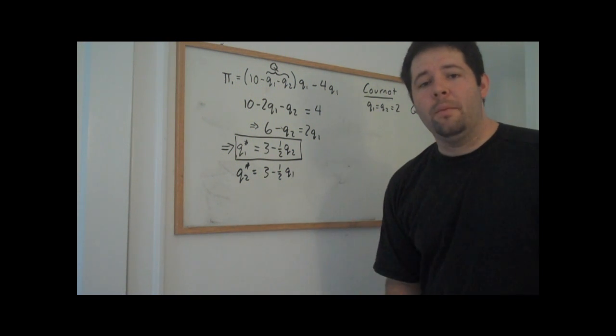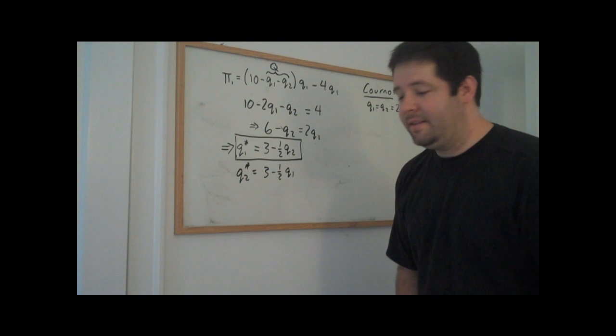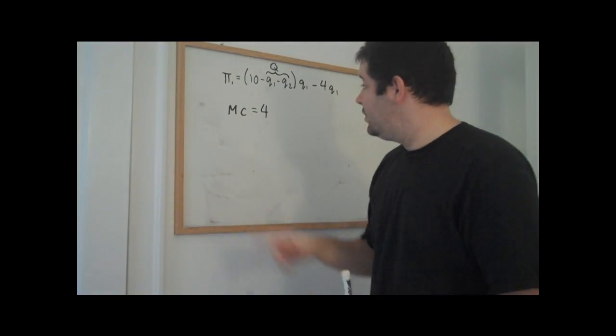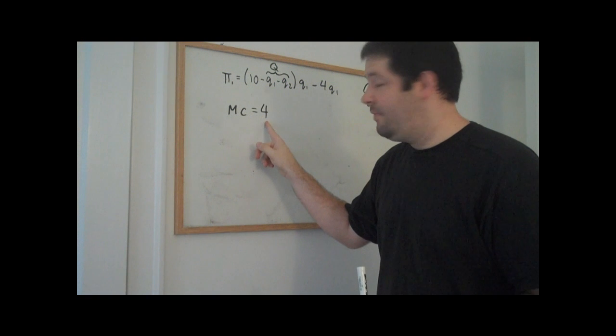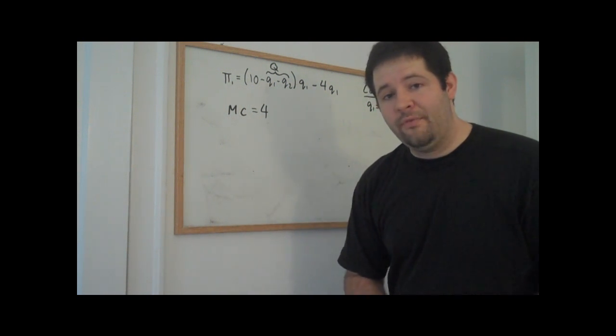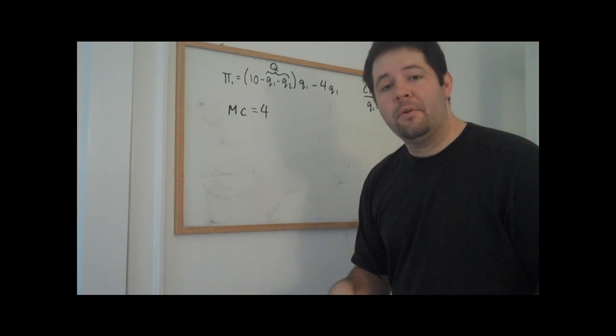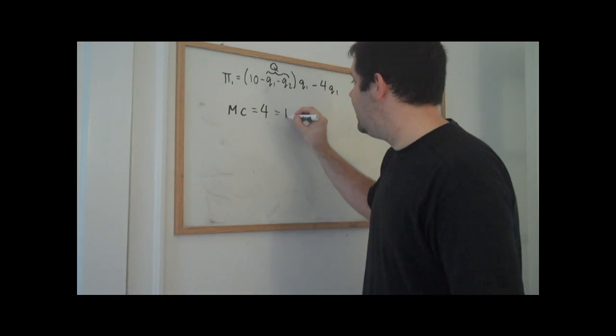Let's think about what perfect competition would look like in this setting. First things first, marginal cost equals four. What we remember from way back when we talked about perfect competition, price equals marginal cost.